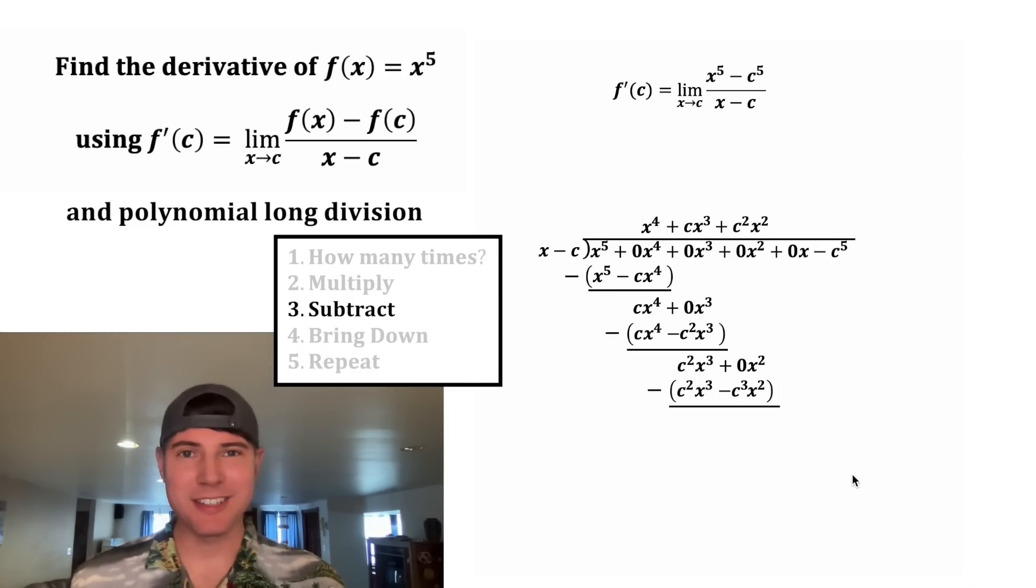And then now we've got to subtract this. As usual, these will cancel each other out. And 0x² minus negative c³x² is positive c³x². And now we can bring down the 0x.